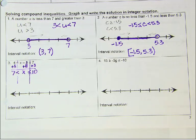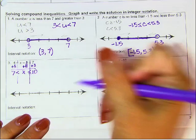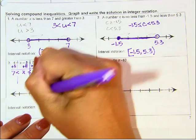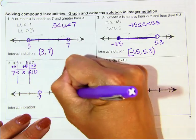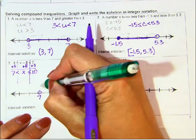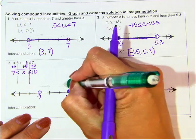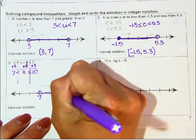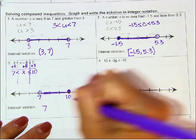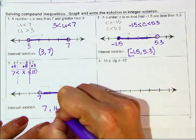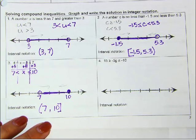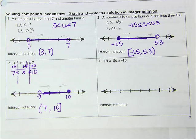So one of my endpoints is 7 and one is 10. Cannot equal 7, can equal 10 so that's filled in. This tells me X is greater than 7 and less than 10, so that is in between. For interval notation, left endpoint is 7, right endpoint is 10. Can't equal 7 — parenthesis around 7 — but it can equal 10, so 10 gets the bracket: (7, 10].